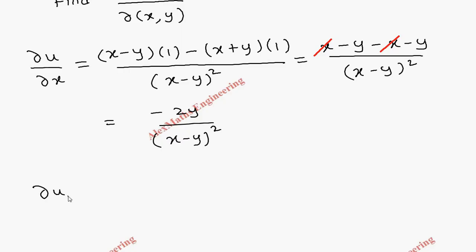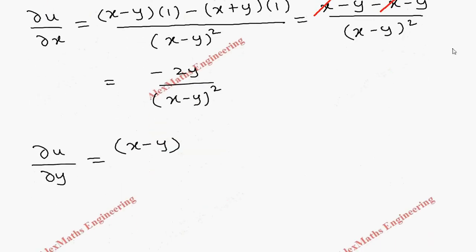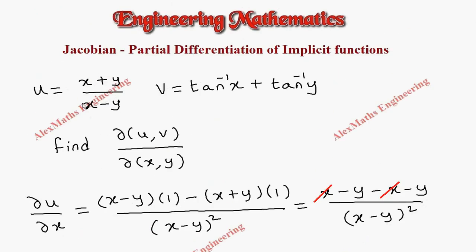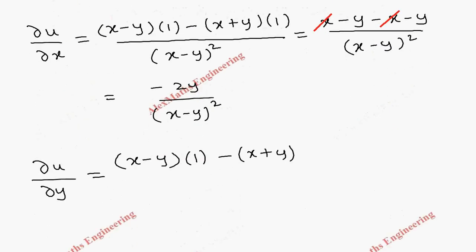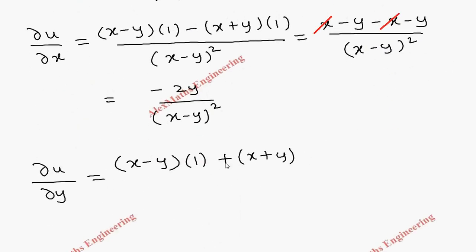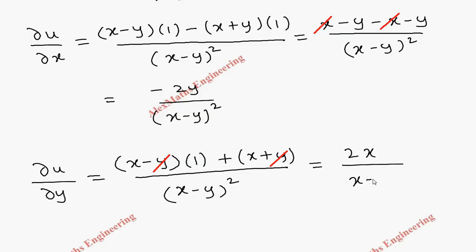Now for the partial differentiation of u with respect to y, we again apply the quotient rule: copy the denominator, the differentiation of the numerator (x plus y) with respect to y is 1, minus the numerator times the differentiation of the denominator. Since we differentiate with respect to y, the denominator (x minus y) gives minus 1, which becomes plus. All divided by (x minus y) whole square. We can cancel minus y plus y, leaving 2x in the numerator over (x minus y) whole square.